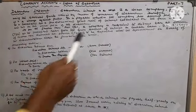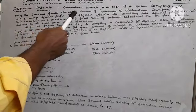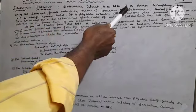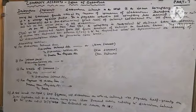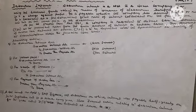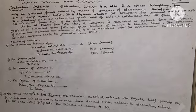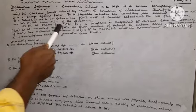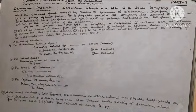Debenture Interest is a cost to an issuer company for using the borrowed funds raised by means of issuance of debentures. Therefore, it is a charge against profit — it is payable whether the company has earned profit or not. It is calculated at a predetermined fixed rate of interest, calculated on the face value and not on the issue price of the debentures.